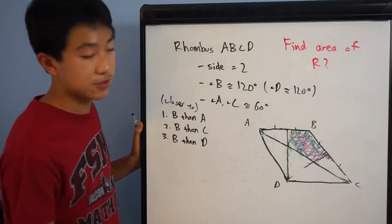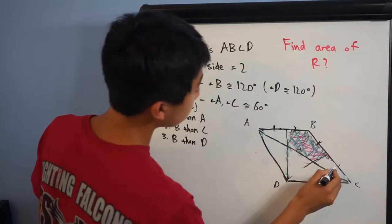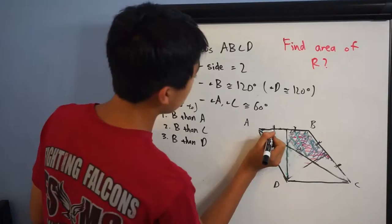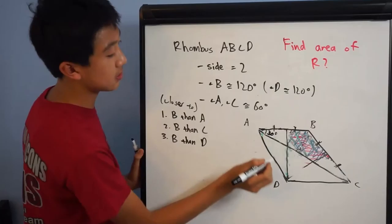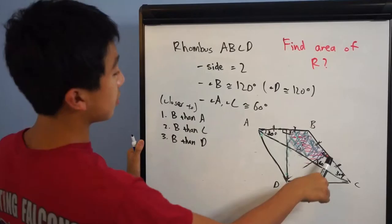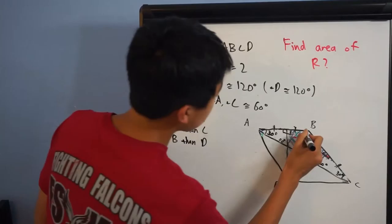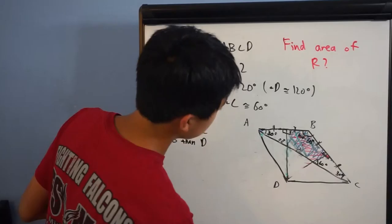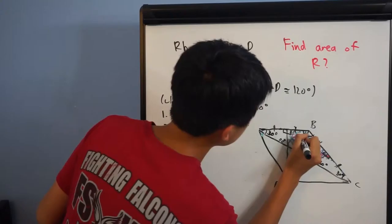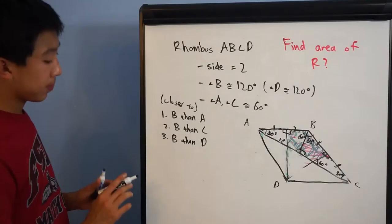Now we know things about our diagram that we didn't before: these sides are bisected, and these sides are bisected as well, which will help us find the area. We also know that this angle is 30 degrees, since this segment splits the 60-degree angle into two. We know this is a right angle, which in turn means the remaining angle is 60 degrees, since 180 minus 90 minus 30 equals 60. So this is also 60 degrees here, and we also know these angles are 60 degrees. So we have two 30-60-90 triangles, which are special right triangles.